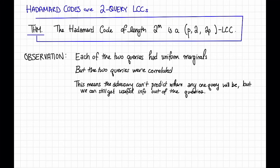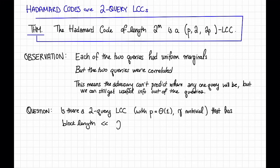Cool. So this theorem might raise a question. Here we have a code which has pretty awesome locality, just has query complexity 2. However, as we saw earlier, the rate is really bad.